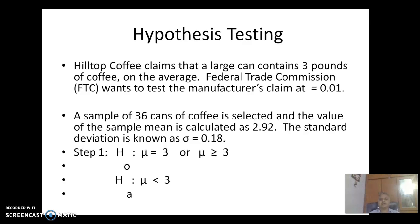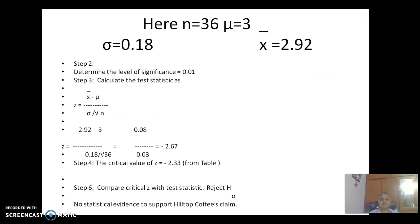So step 1. H0: what does he claim? He wants to claim 3 pounds of coffee. So let H0 be mu equals 3. Alternative hypothesis: mu less than 3. This is a left tail test. So here the sample size n equals 36, standard deviation sigma equals 0.18, sample mean x bar equals 2.92, population mean mu equals 3.